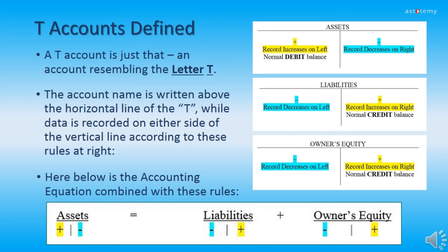Now we get into a definition of what a T-Account is. A T-Account is just that — it's an account resembling the letter T. The account name is written above the horizontal line of the T, while data is recorded on either side of the vertical line according to these rules. For asset accounts, increases are recorded on the left and asset accounts have a normal debit balance. For liabilities and owner's equity, increases are recorded on the right and those accounts have a normal credit balance.